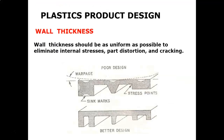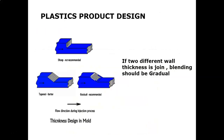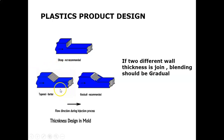Wall thickness should be as uniform as possible to eliminate internal stresses, distortion, and cracking. If two different wall thicknesses are joined, blending should be gradual. The non-recommended design has no tapered transition. If you want to join two different walls, you should blend them gradually — a tapered or gradual design. The flow direction during injection molding must be considered; if the material follows abrupt thickness changes, it can break more quickly.